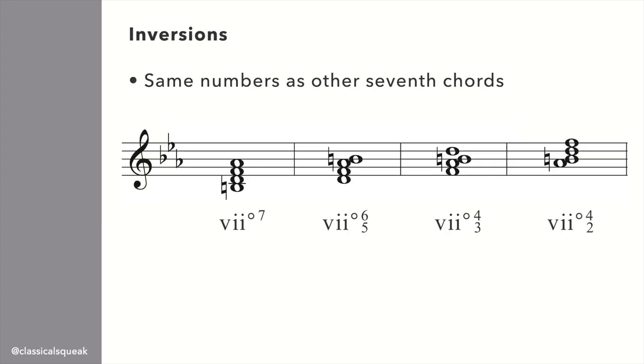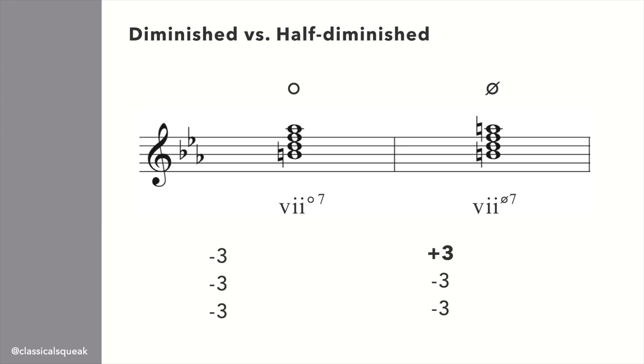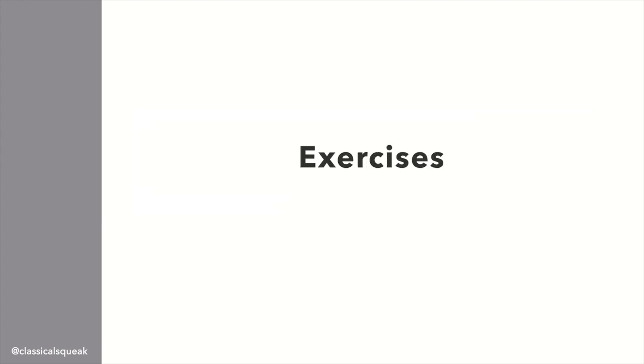The same numbers apply here for inversions as with dominant sevenths. The difference for the notation underneath is 7 diminished 7th. When we have all stacked minor thirds, this is a fully diminished seventh, which is a degree symbol. If you see a tiny slash through the degree symbol, this means it's a half diminished seventh. This means instead of all stacked minor thirds, the top is a major third, or diminished triad with a minor seventh on the outside. Okay, let's round out this lesson with some exercises.